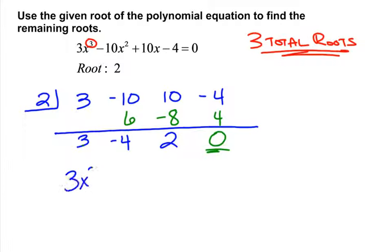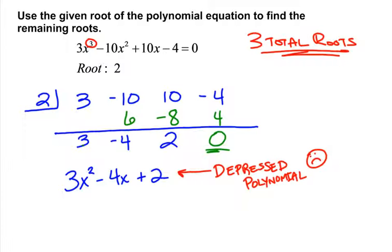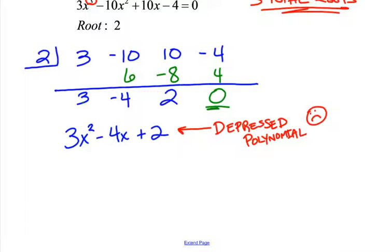We're going to take the depressed polynomial 3x squared minus 4x plus 2 and use it to find the remaining roots. This is called a depressed polynomial because we've removed one root from the original, leaving a lower degree polynomial. We'll try to factor it, but 3x squared minus 4x plus 2 does not factor evenly, so we'll use the quadratic formula: negative b plus or minus square root of b squared minus 4ac, all over 2a.